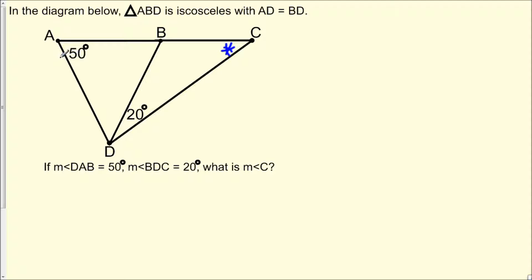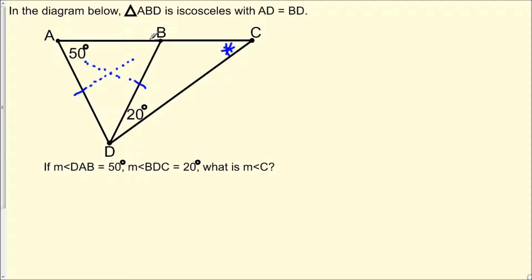We can assume that triangle ABD is isosceles, and that AD is equal to BD. With problems like this, you definitely want to make tick marks just to give you a reference of what information you could use. Because we know these two sides are the same in this isosceles triangle, using the isosceles triangle theorem, we can say that the angles opposite the congruent sides are also congruent. Since angle DAB is 50 degrees, we can also say that the measure of angle ABD is 50 degrees.